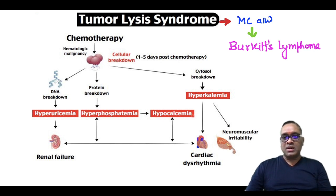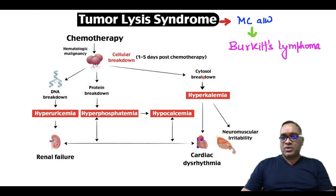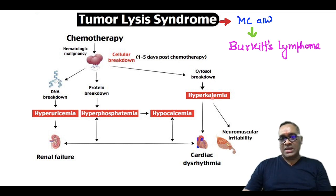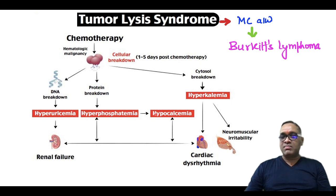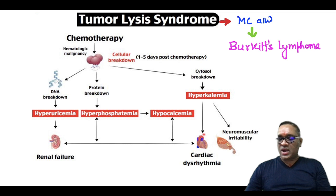Because of the hyperphosphatemia, there will be hypocalcemia. Additionally, cytosolic breakdown occurs as the cytoplasm of the tumor cells breaks down, causing hyperkalemia. The consequences of these events include renal failure due to hyperuricemia, hyperphosphatemia, and hypocalcemia, as well as cardiac dysrhythmia.